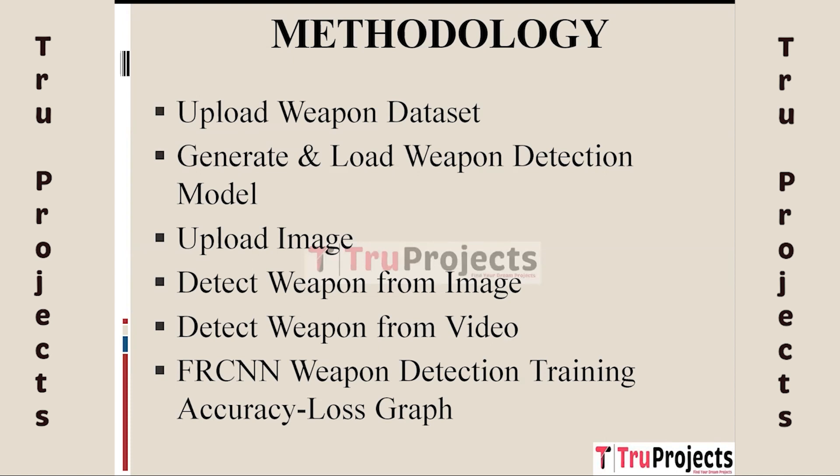The second module is Generate and Load Weapon Detection Model. In this module the weapon detection model is generated and loaded. The model is based on the Faster RCNN architecture, a popular object detection framework. It is designed to learn and identify weapons within images and videos by leveraging deep learning techniques. The third module is Upload Image, where users can upload an individual image to analyze for the presence of weapons.